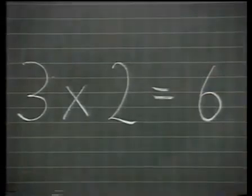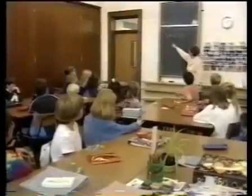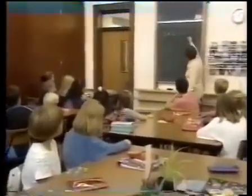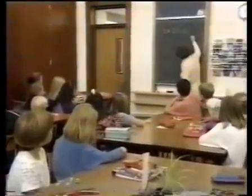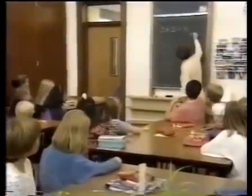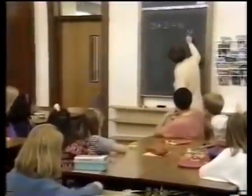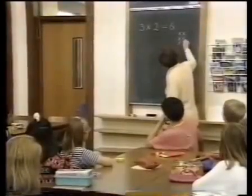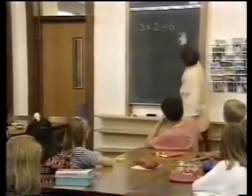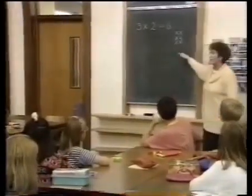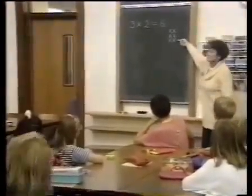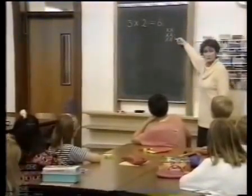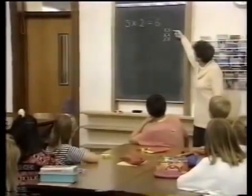Which is what we can do. If we've got three groups of two, we can represent that like this. Where I have now three groups of two. I've put them together in an order, but we've got them there.